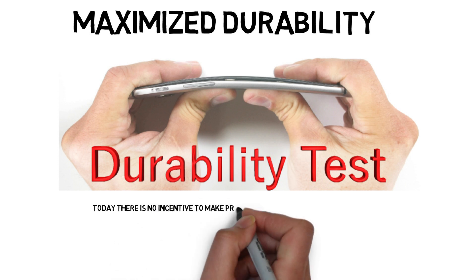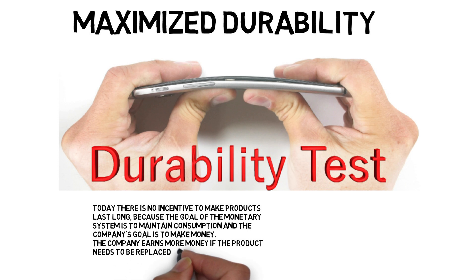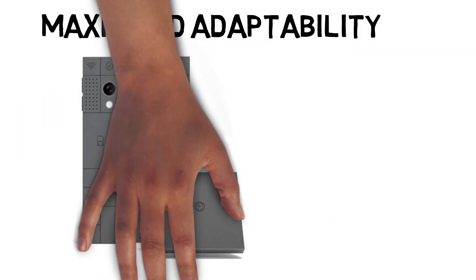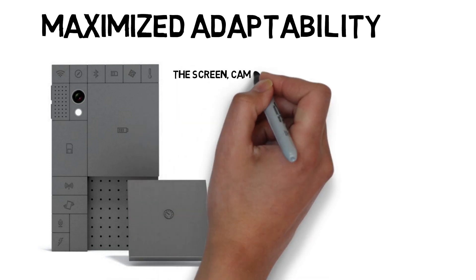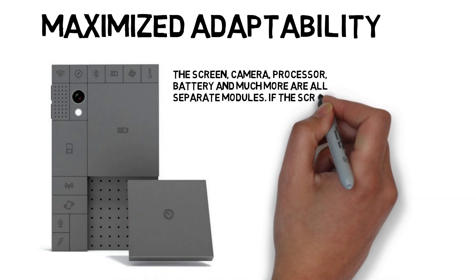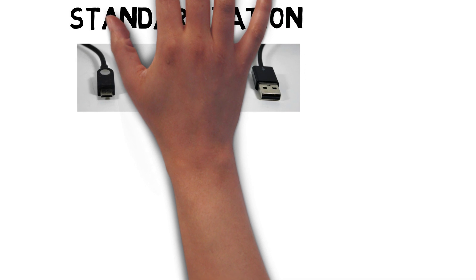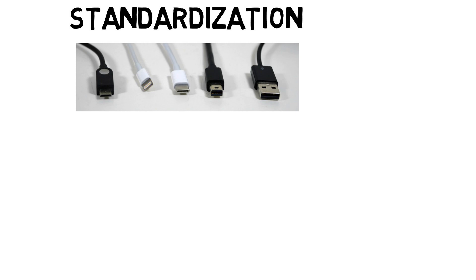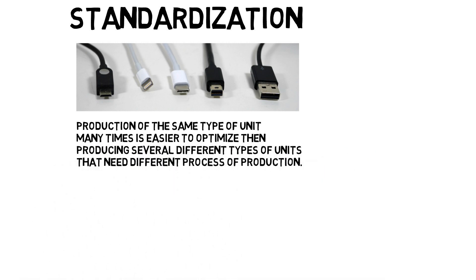Today, there is no incentive to make products last long because the goal of the monetary system is to maintain consumption, and the company's goal is to make money — the company earns much more if the product needs to be replaced. A simple example of maximized adaptivity is phone blocks: imagine a mobile phone made out of small modules that can be put together like Lego. The screen, camera, processor, battery and more are all separate modules. If the screen breaks, it's easy to replace just that module. If a better camera gets invented, we can replace just the camera without replacing the whole phone. An easy way to understand standardization is to look at mobile chargers — today we use different chargers depending on the mobile brand. It would be more efficient if one charger fit all devices, since producing the same unit many times is easier to optimize than producing several different types.